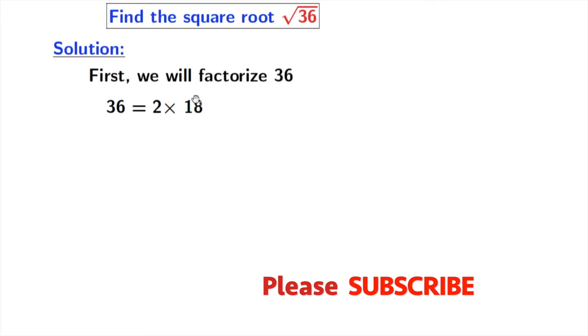Again look that 18 is an even number, so it will also be divisible by 2. And we get 2 times 9. And look that 9 is equal to 3 times 3. So finally we get 36 is equal to 2 times 2 times 3 times 3.